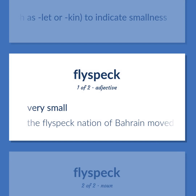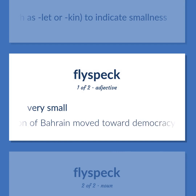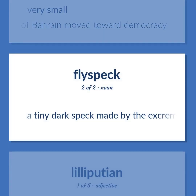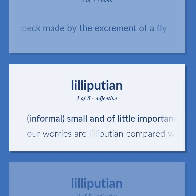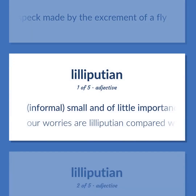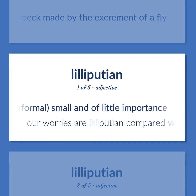Flyspeck. Very small. The flyspeck nation of Bahrain moved toward democracy. A tiny dark speck made by the excrement of a fly. Informal: small and of little importance.